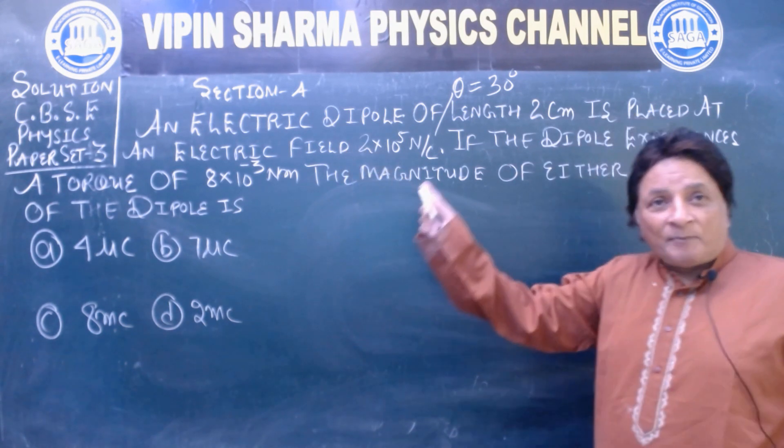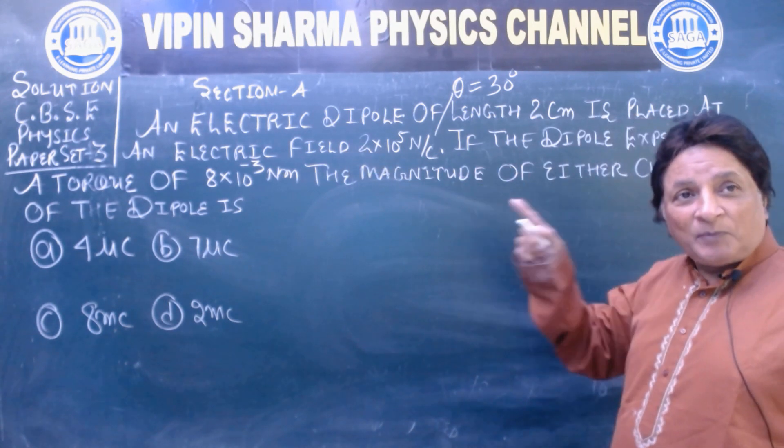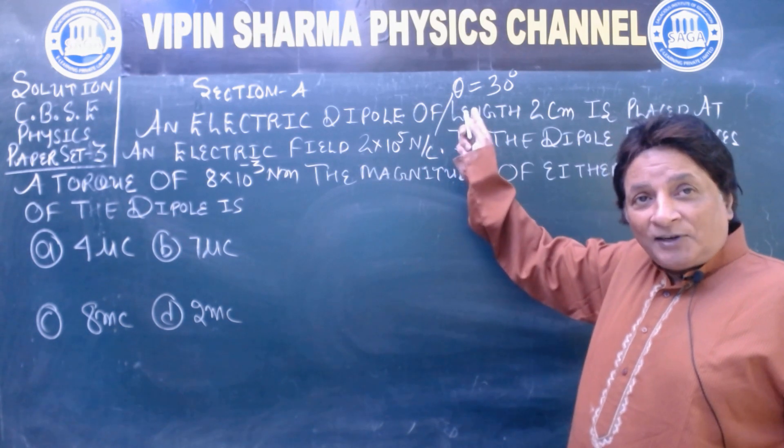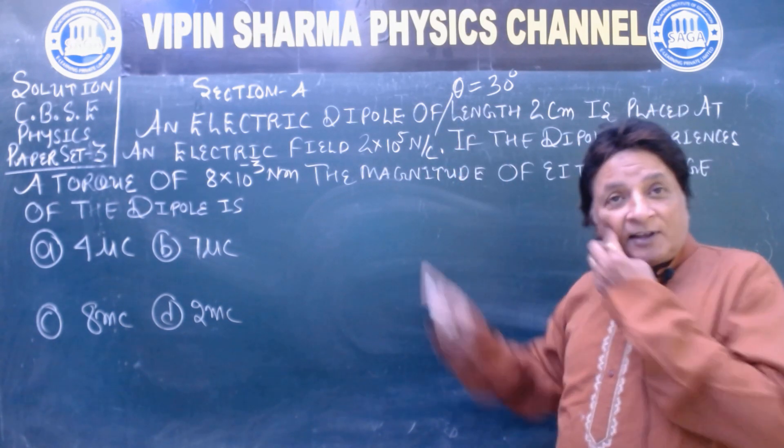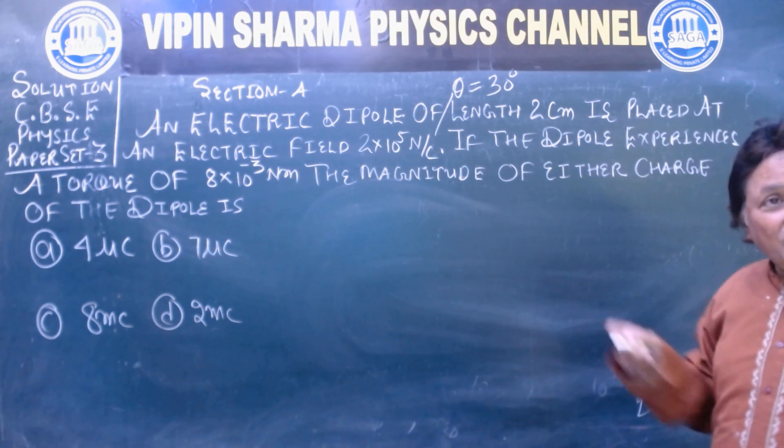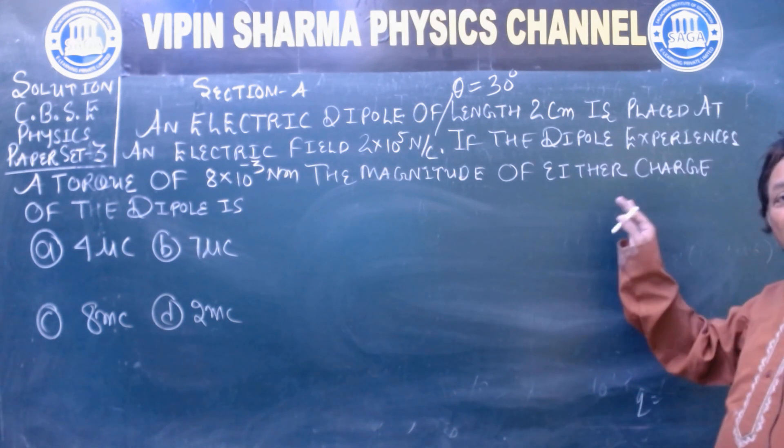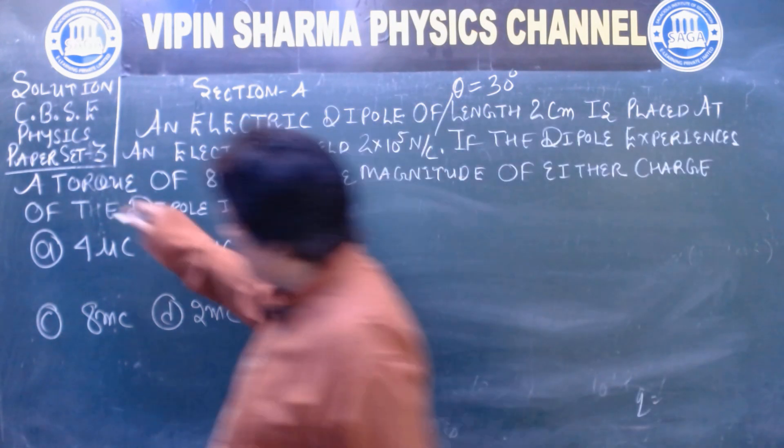An electric dipole of length 2 cm is placed in an electric field 2 × 10^5 Newton per Coulomb, making an angle theta 30 degrees with the electric field. If the dipole experiences a torque of 8 × 10^-3 Newton meter, what is the magnitude of either charge of the dipole?